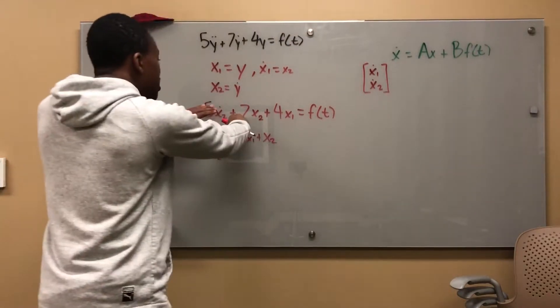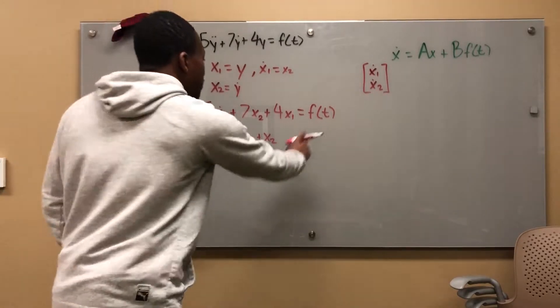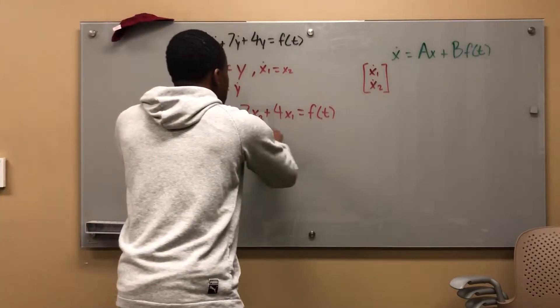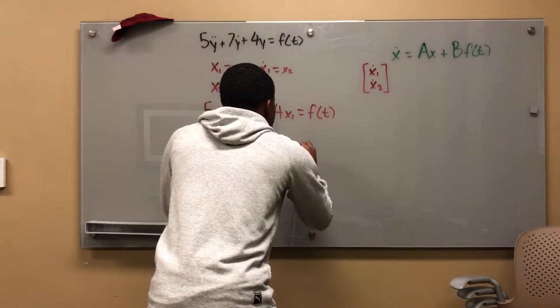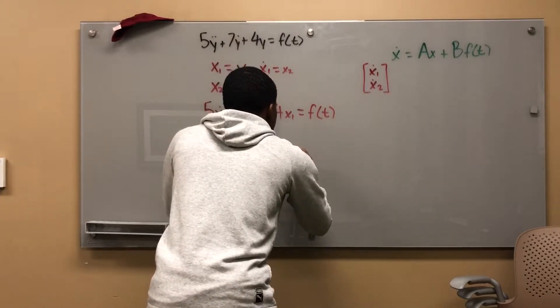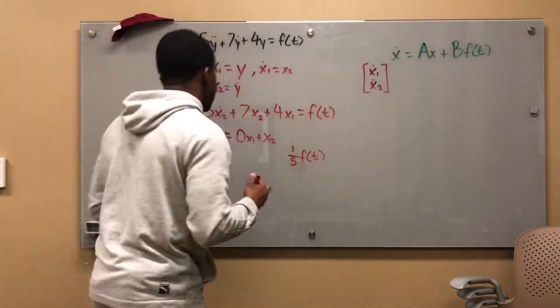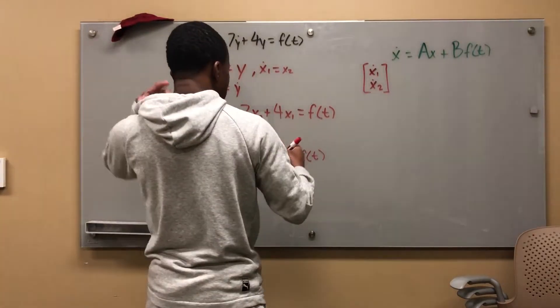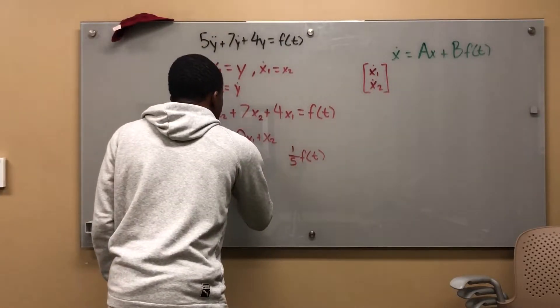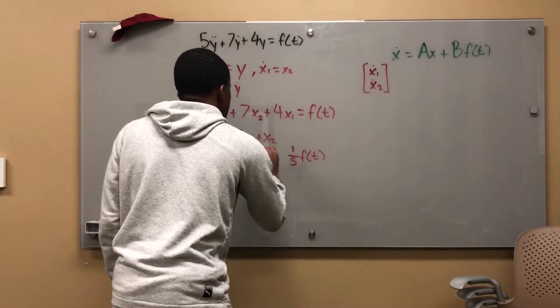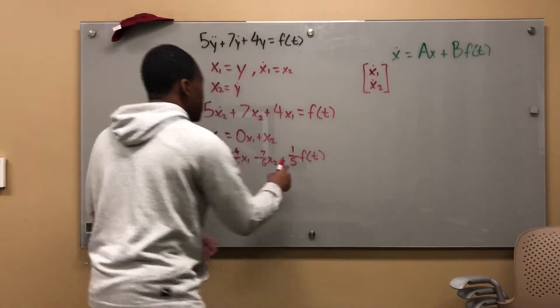For x_2 dot, I can use this equation to solve for x_2 dot. I'm going to subtract everything and then divide by 5 to get x_2 alone. It's just algebra from this point. I'm going to leave this f(t) at the very end, so I know I'm going to end up with 1/5 f(t). x_2 dot is now equal to -4/5 x_1 - 7/5 x_2 plus...